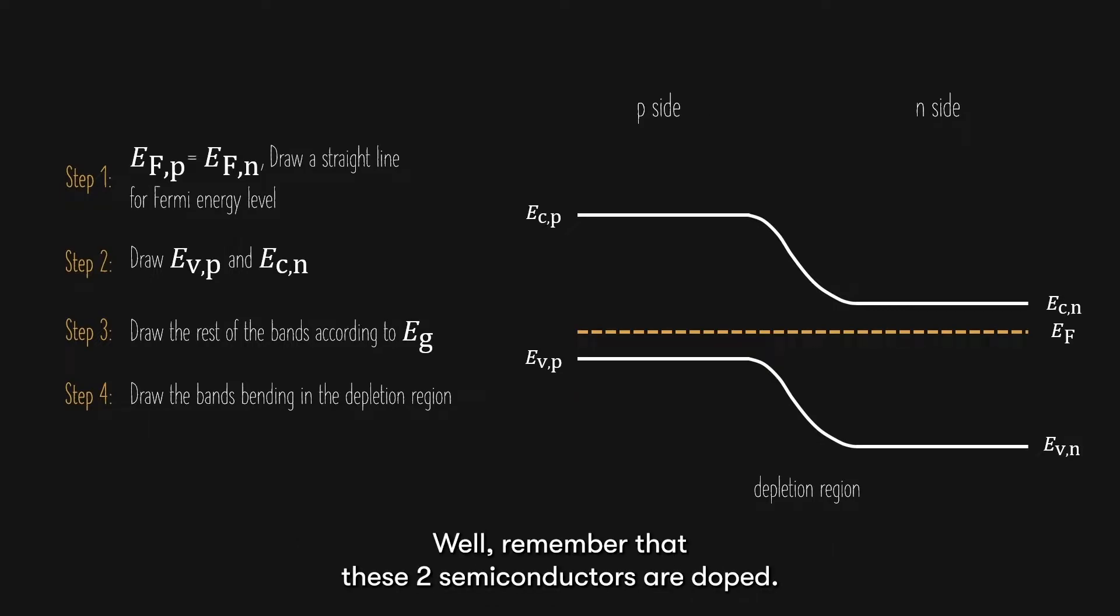Well, remember that these two semiconductors are doped. For p-side, a portion of the initial silicon atoms have been replaced by an element which has three valence electrons, like boron.